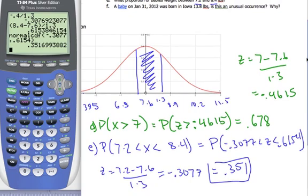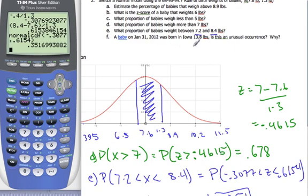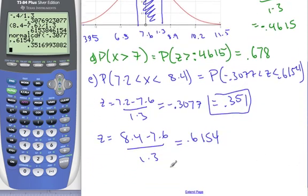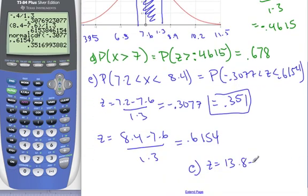Last question, F. A baby born January 31, 2012 in Iowa at 13.8 pounds. Is this an unusual occurrence? Well, if it is more than three standard deviations away, you can definitely say it is an unusual occurrence. So, let's find out where this actual baby lies. To do that, I'm going to find my z-score, which is 13.8 minus 7.6 over 1.3. And so, I can say 13.8 minus 7.6, divide by 1.3.